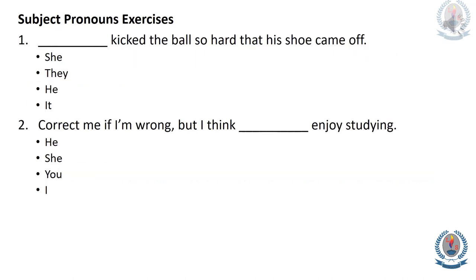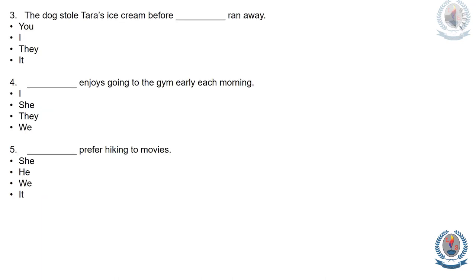Here are some exercises. Try to improve your knowledge by engaging in them. Number one: blank kicked the ball so hard that his shoe came off. Number two: Correct me if I'm wrong, but I think blank enjoys studying. Number three: The dog stole Tara's ice cream before blank ran away. Number four: Blank enjoys going to the gym early each morning. Number five: Blank prefer hiking to movies.